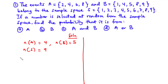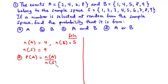Let's solve for A. We are going to find the probability that the number selected from the sample space is from A. The probability of event A is equal to the number of elements in A divided by the number of elements in the sample space. The number of elements in A is 4 and in S is 9, so the probability is 4 over 9.